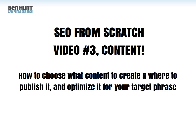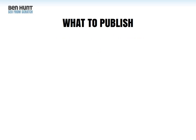Let's go with SEO from scratch video number three. We are talking all about content in this one. What we're going to cover is how to choose what content you should create, where to publish it, and how to optimise it for your target phrase. So if you've done your keyword research, you've got a target phrase and you need to make a page that is highly optimised around that target phrase. We want that page to rank as high as possible. So let's ask: what should we publish?